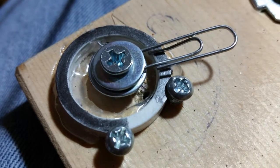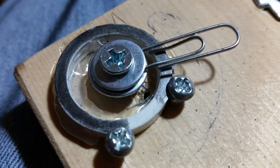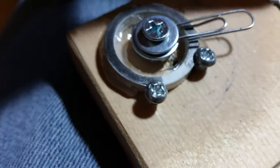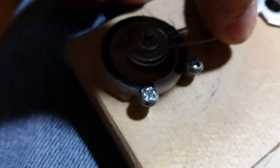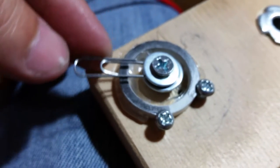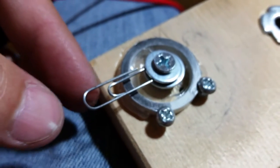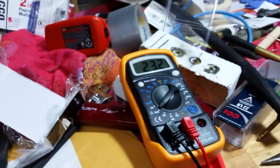The paper clip touches the strip and I can move it around like this. That gives me variable resistance. I kind of need two hands for this, but I've got my multimeter here.